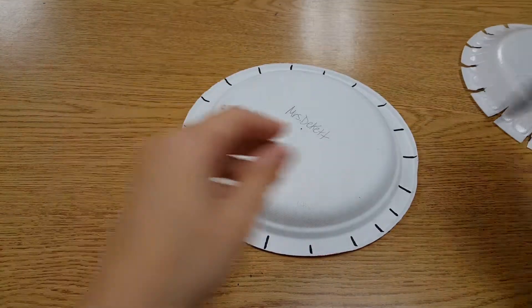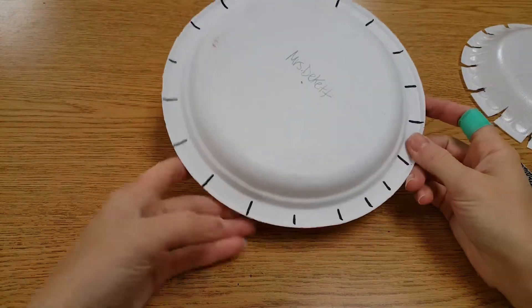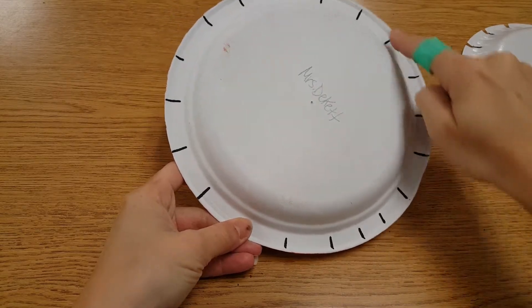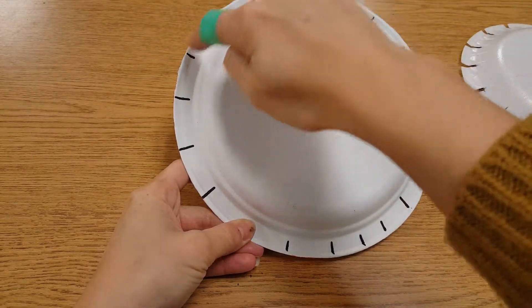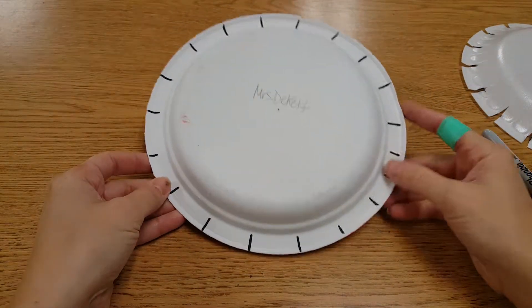When you remove the plate, double check to make sure that you have 19. So: 1, 2, 3, 4, 5, 6, 7, 8, 9, 10, 11, 12, 13, 14, 15, 16, 17, 18, 19. These are our notches for our loom.